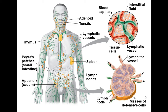Lymph nodes throughout the body contain capillaries, interstitial fluid, and stored defensive cells. Swollen lymph nodes often indicate the body is fighting a pathogen. The body also has dedicated immune organs: thymus, spleen, adenoids, tonsils, appendix, and bone marrow, which produces large numbers of B cells.